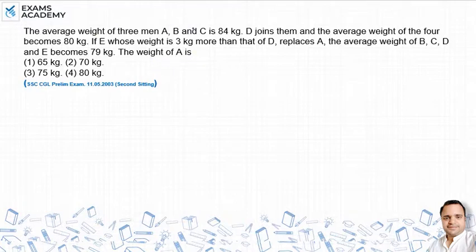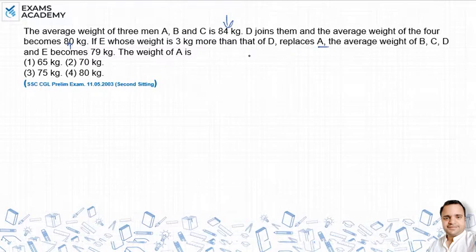Question में कह रहा है कि A, B, C जो है 3 आदमी हैं, उनका जो average weight दे रखा है 84. फिर question में कहता है कि D join करता है और average weight बन जाता है इन 4 का 80 kgs. E जिसका weight 3 kg ज्यादा है D से, वो replace करता है A को, तो B, C, D और E का average weight 79 kg हो जाता है. तो हमसे पूछ रहा है कि A का कितना weight है.